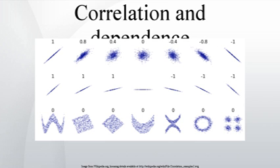A correlation between age and height in children is fairly causally transparent, but a correlation between mood and health in people is less so. Does improved mood lead to improved health, or does good health lead to good mood, or both? Or does some other factor underlie both? In other words, a correlation can be taken as evidence for a possible causal relationship, but cannot indicate what the causal relationship, if any, might be.